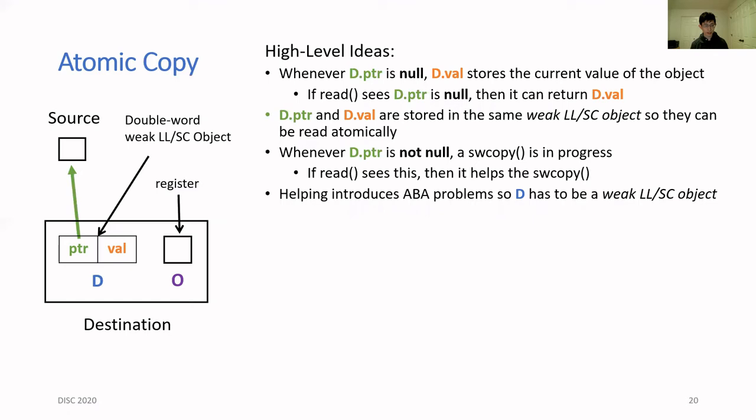Now if the pointer field of D is not null, then that means that a single-writer copy is in progress. In this case, if a read operation sees it, then it will try to help complete the single-writer copy. This kind of helping introduces an ABA problem, and this is the reason why the variable D has to be a weak LL/SC object.